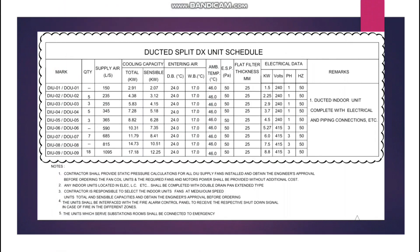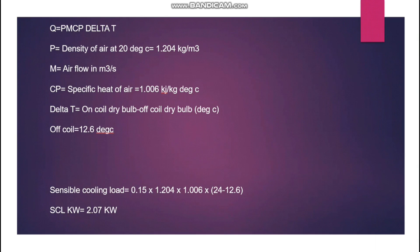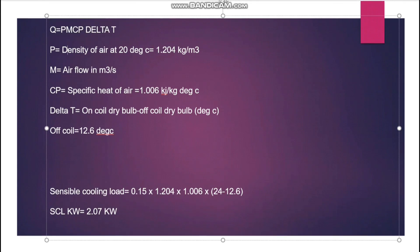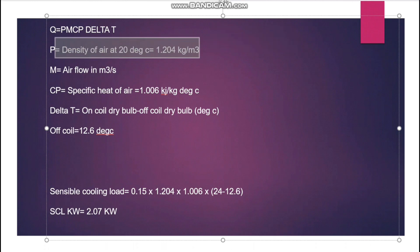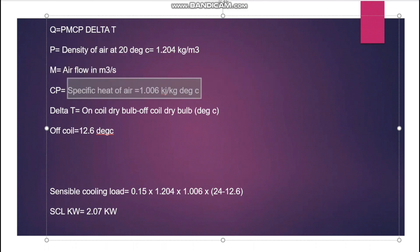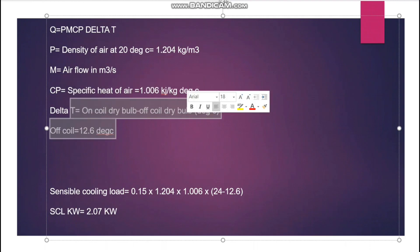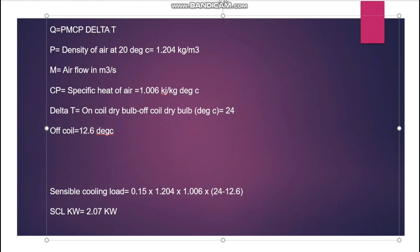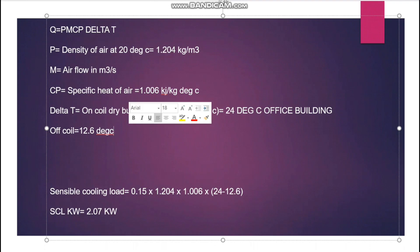Now we'll verify the sensible load value. The first unit has 2.07 kW sensible load and 150 L/s total airflow. We use the formula Q = m × Cp × ΔT, where density of air at 20°C is 1.204 kg/m³, Cp is 1.006 kJ/(kg·°C), and ΔT = on-coil dry bulb minus off-coil dry bulb. The on-coil is 24°C for the office building. For the off-coil, we need to determine the appropriate temperature.